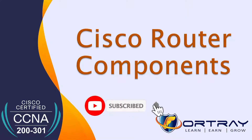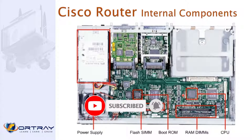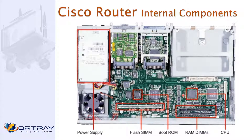A router's internal components are similar to a PC. It has a power supply which provides power, and flash memory which holds the operating system. Just like a Windows operating system is stored in the C drive on a computer, the Cisco router operating system is stored in flash memory.